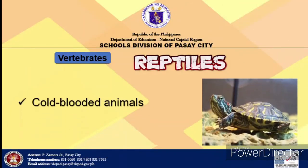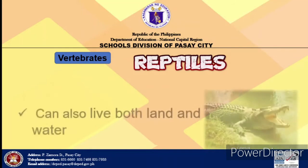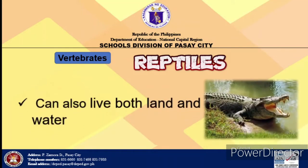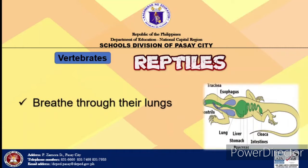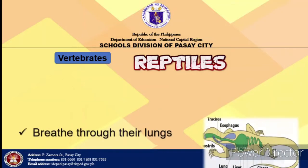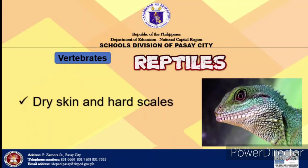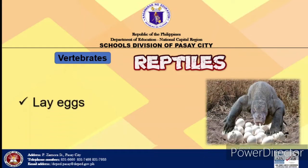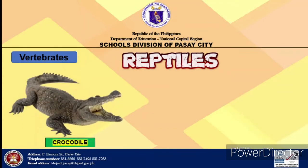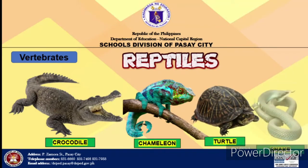Reptiles are cold-blooded animals. They can also live in both water and land, although they are more adapted and can live on land for a long period of time. This is because they have developed lungs as well as body structures that enable them to fully live on land. The reptile's body is covered with dry skin and hard scales, which prevent the loss of water from the body through evaporation. Their eggs have leathery shells, which makes them adapted for developing on land. Examples are crocodile, chameleon, turtle, and snake.